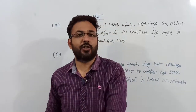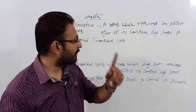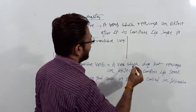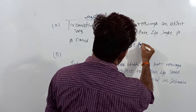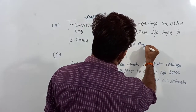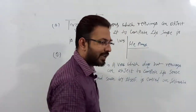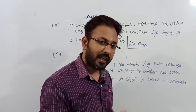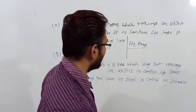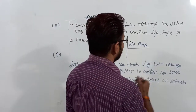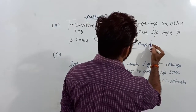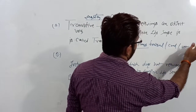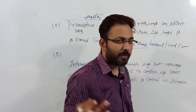If we take an example, we will understand it better. For instance, consider the sentence 'He plays.' That sentence needs something more — he plays what? Football, cricket, chess, or something else — an object is needed to complete the sense.